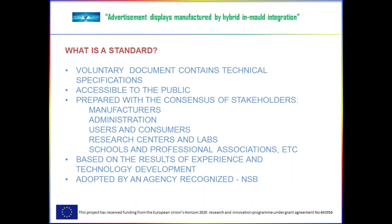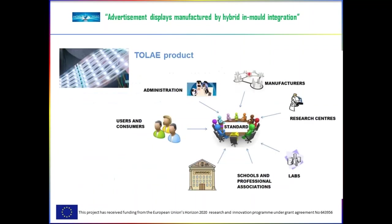The main thing is that it has to be adopted by an agency recognized like UNE, which is a national standardization body. Focusing on the case of toll-high displays, being an innovative product in the market without specific standards, the manufacturers could agree to establish requirements to make a differentiation of their product from the rest of the market, always with the consensus of the rest of the market, which has to be taken into account.